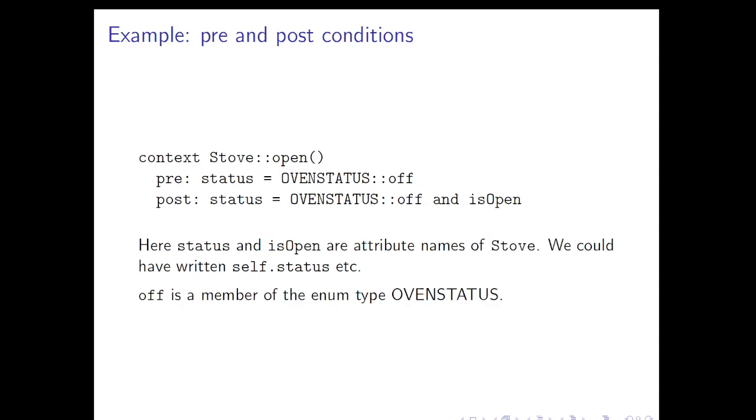Here's the other major common use of OCL: pre and post conditions for an operation. So here we're talking about the open operation on a class Stove. Notice the double colon indicating that. It's taking no arguments and we're not being told what the return type is, if any. We have a precondition that status has to be OvenStatus::off. Implicitly, status must be self.status. There's nothing else for that to mean. So we have to be talking about some status attribute of the class Stove, or conceivably a linked object of type status.